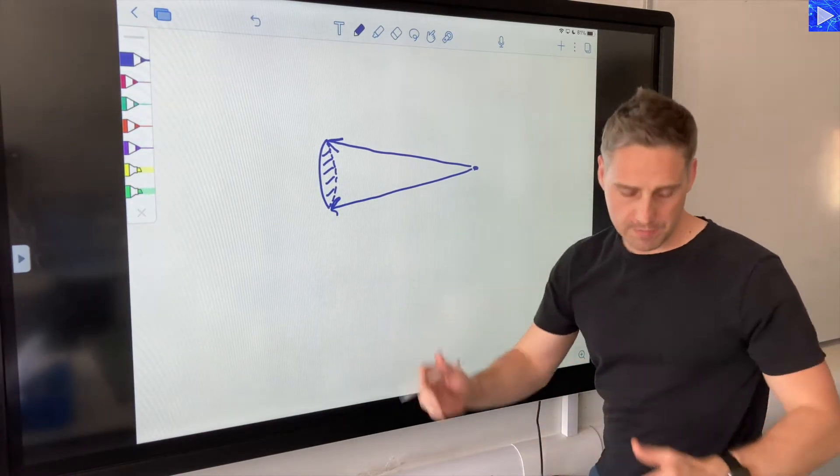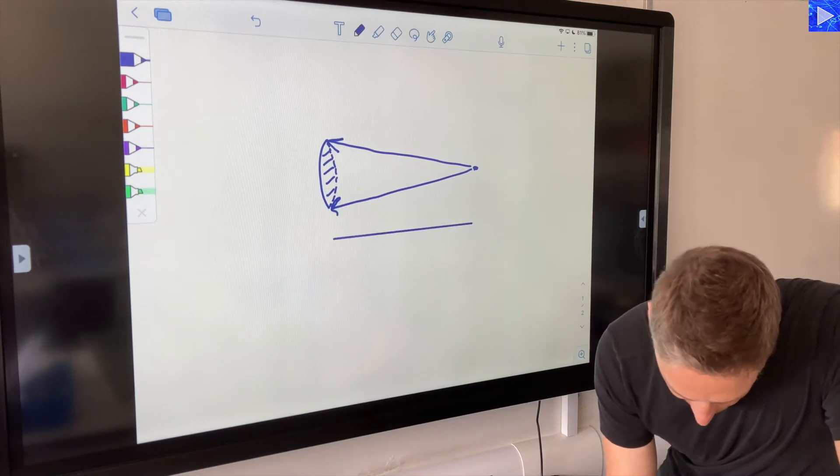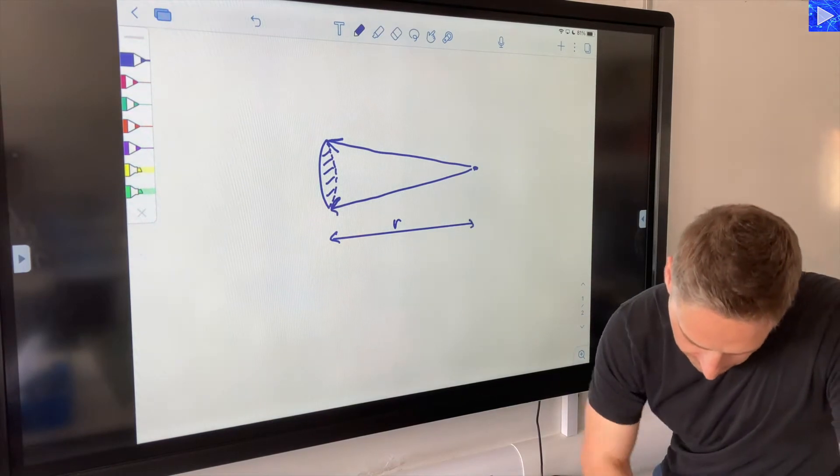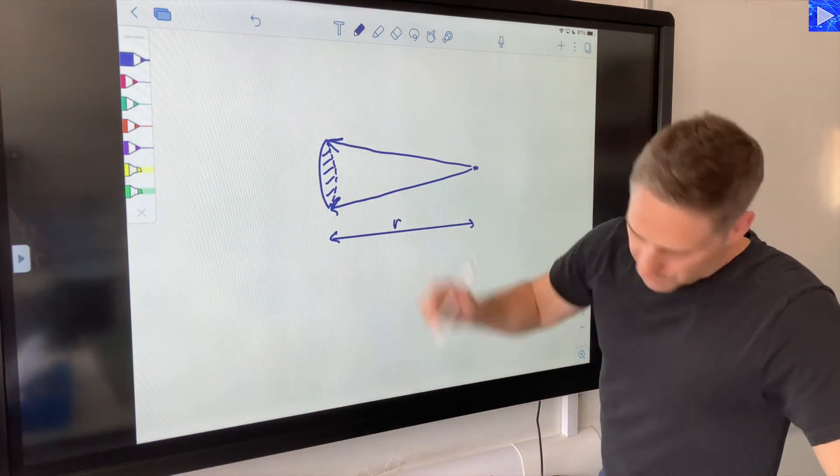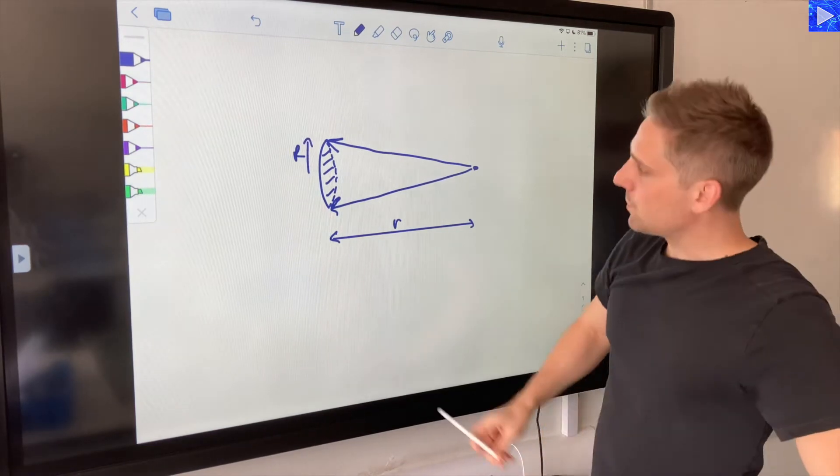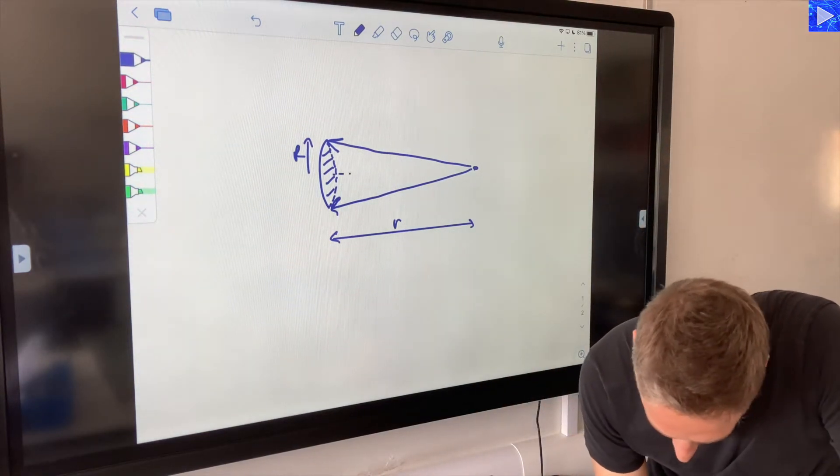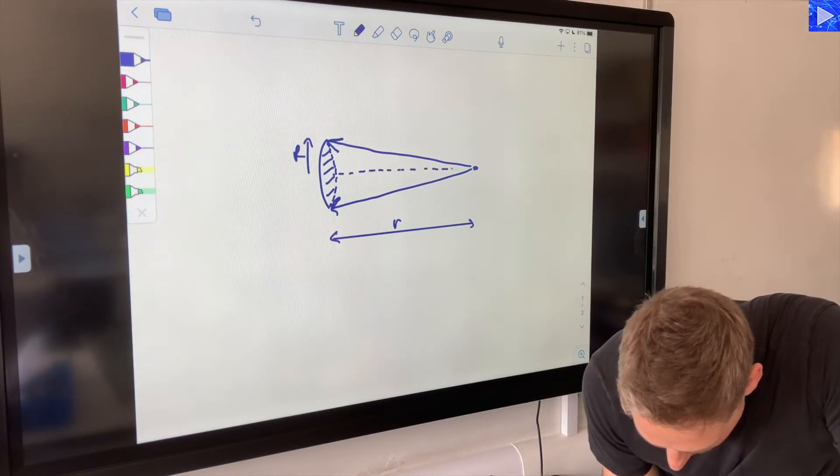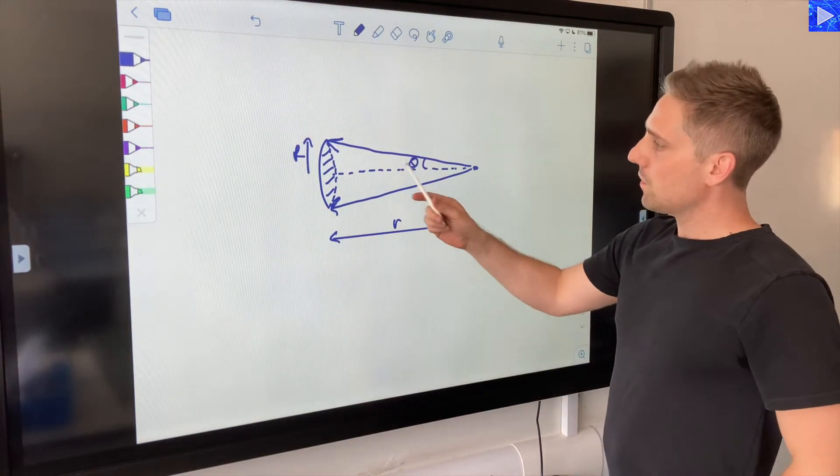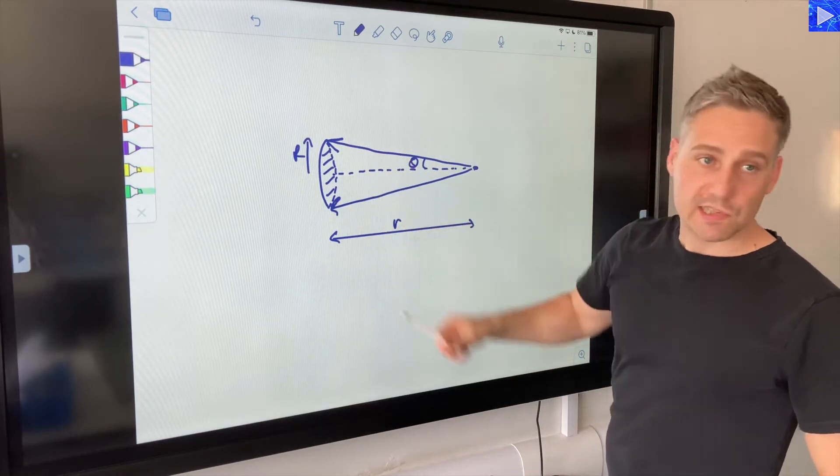So here we are at distance small r from the light source. That distance there is little r. If we say the radius of that circle is capital R, and then if we take the center line here, we'll define that angle there as theta. So we've got little r, large R, theta. The area here is a circle, so that's cross-sectional area.